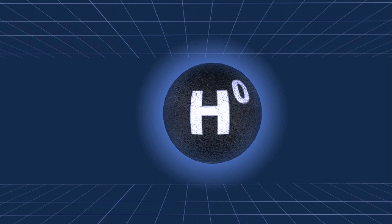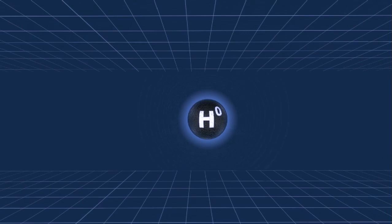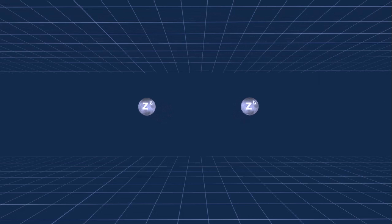The Higgs particle can decay in many ways. The decay into two Z0 particles is relatively easy to observe in the ATLAS detector.